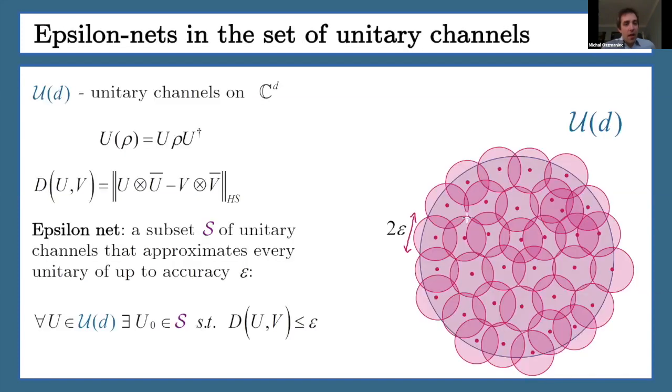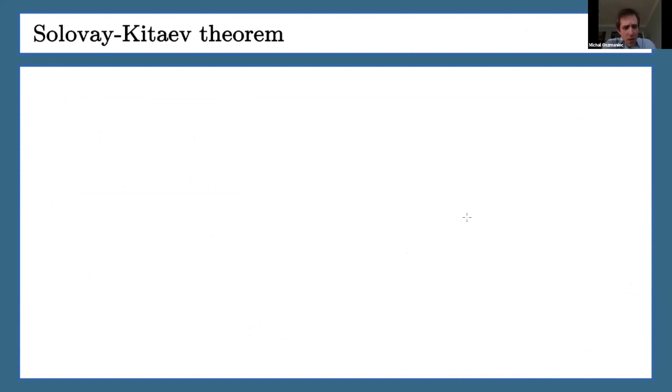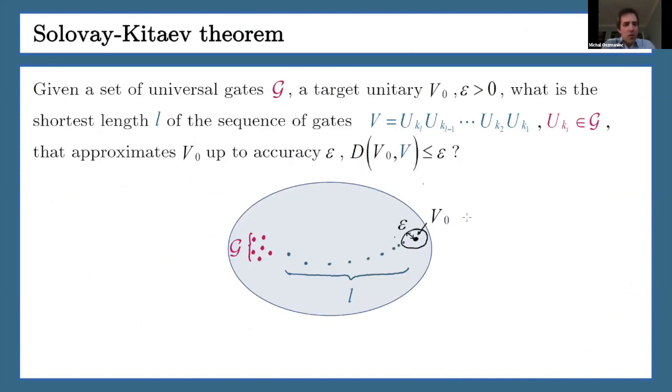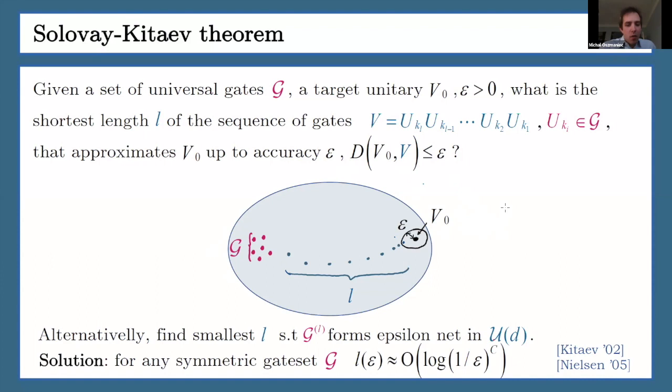Now, those nets appear naturally in the context of the quantum compilation of quantum gates. In the context of compilation of quantum gates, you're given a collection of primitive gates G, some universal ones, and then you want to find the shortest length of a sequence of those gates, such that you can reach your target unitary V. Or alternatively, you can look for the smallest L, such that the set consisting of sequences of gates from G of length L forms an epsilon net in the unitary group.